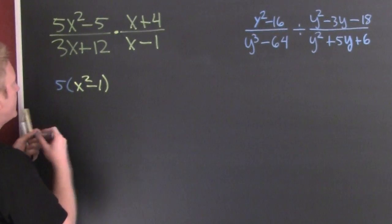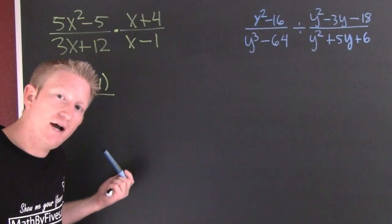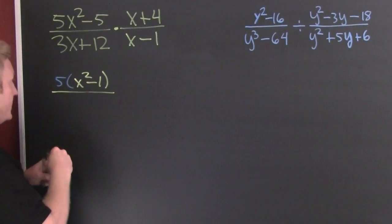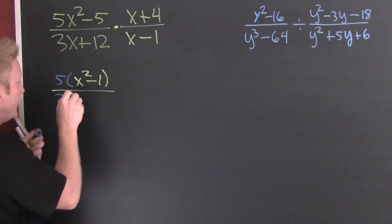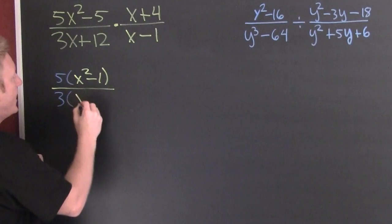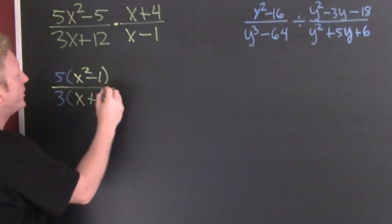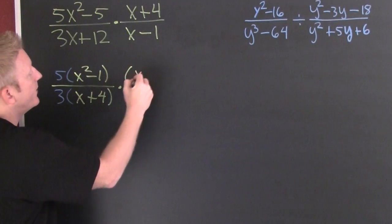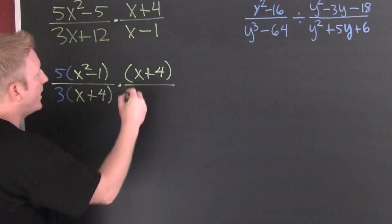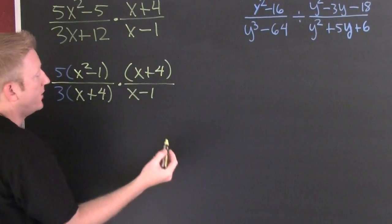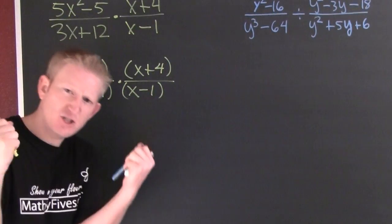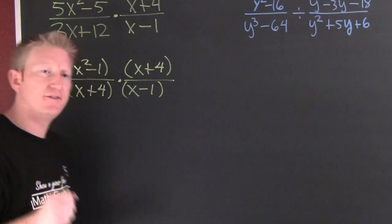Down there in that denominator — first rule of factoring — take out a common factor. I see it's three, and then leftover on the inside I'm going to have x plus four, times x plus four, divided by x minus one. Wait a minute — that can factor further! It's screaming difference of squares.